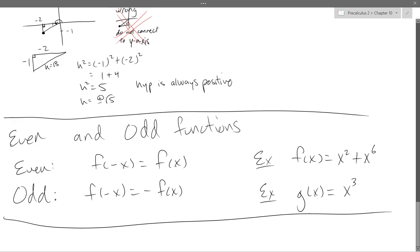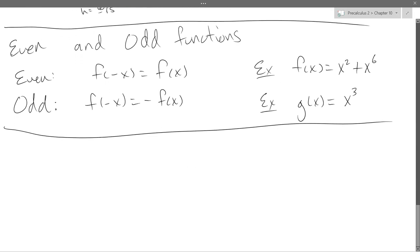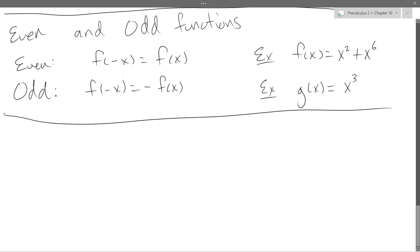So this means f of negative x is negative f of regular x. All right, so those are even and odd properties. So which functions that we're using are even and odd? And how do we know?